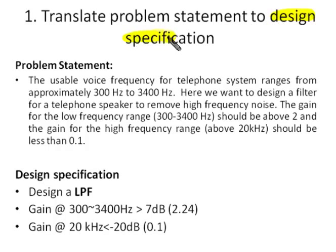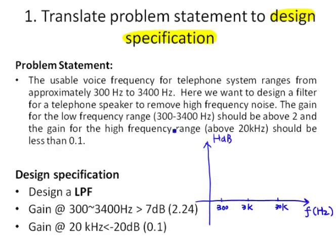Let's work on the problem statement and translate it into design specification. The useful signal is from 300 Hz to 3400 Hz, and we want to remove high frequency noise, so this should be a low pass filter. The gain of the circuit should be at least 2, or expressed in decibels, we can set the passband gain at 10 dB, which is equivalent to a gain of 3.16.